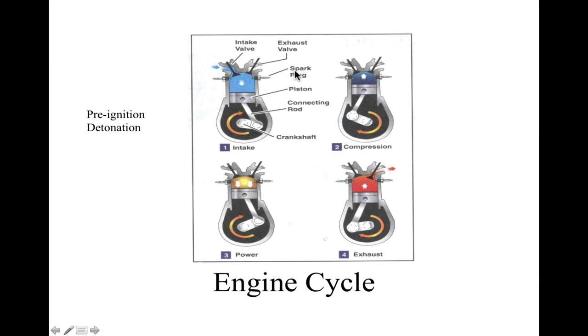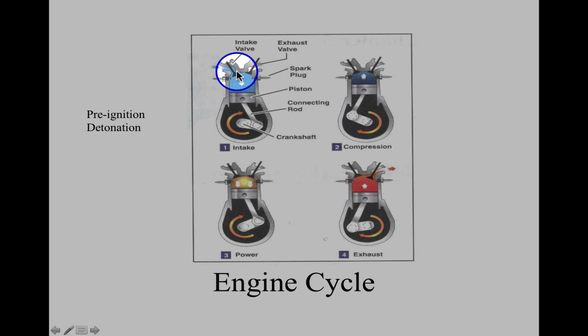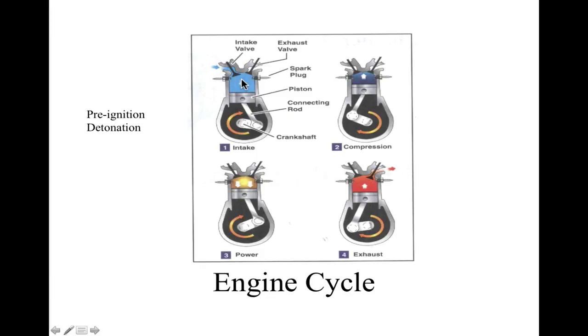Let's take a look through each step. What happens in the intake stroke is the intake valve opens and lets fuel-air into the combustion chamber. Remember we talked about the carburetor mixing the fuel and air? Where does it go? It goes right here. The intake valve opens and draws in the fuel-air mixture.